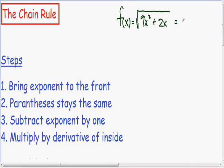So instead of writing the square root of 9x cubed plus 2x, I'm going to write 9x cubed plus 2x with a one-half exponent. Now we certainly have a parentheses followed by an exponent.